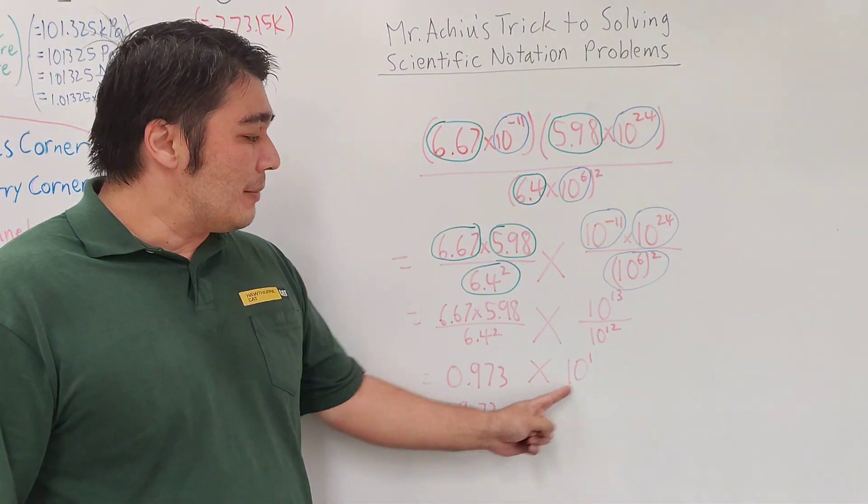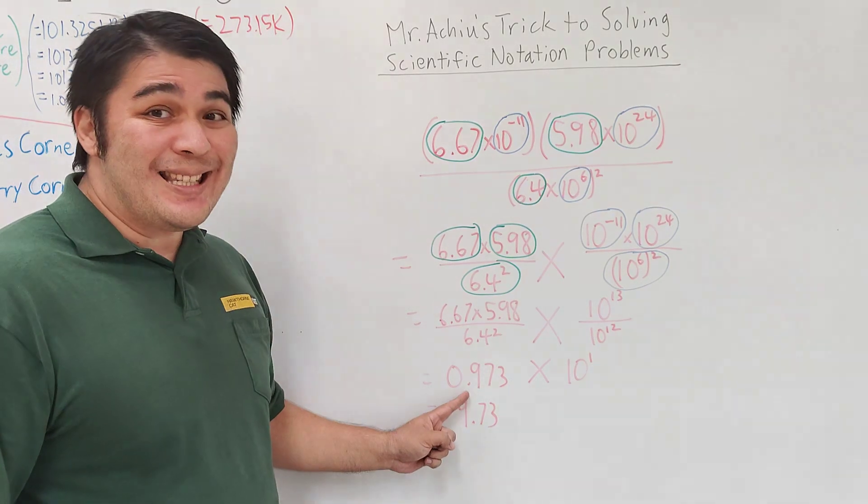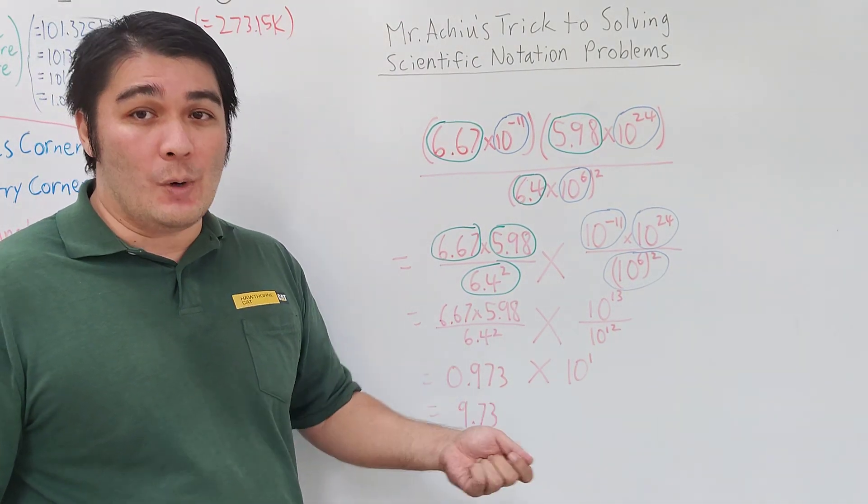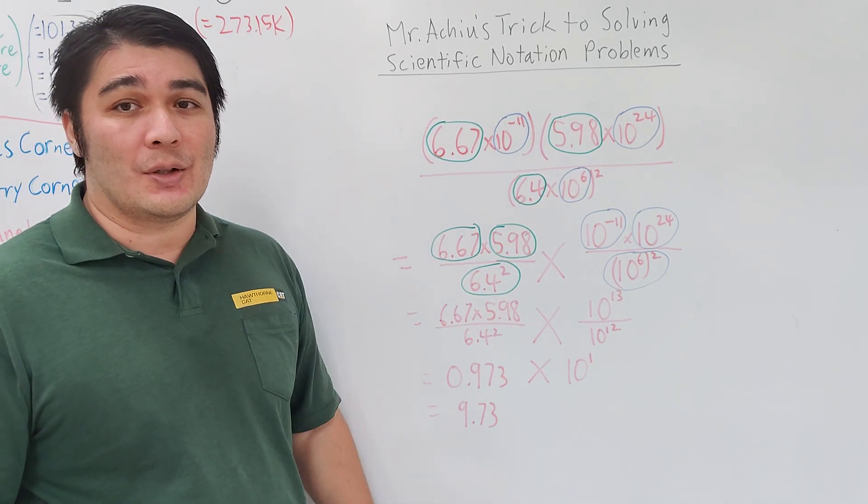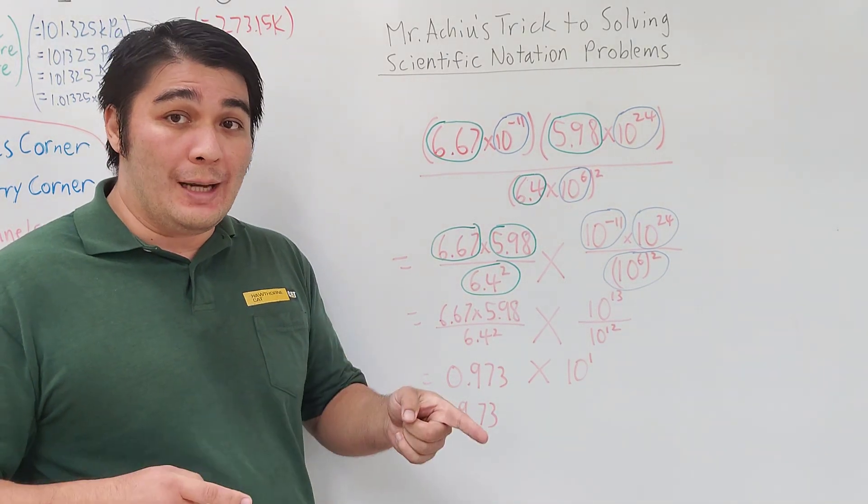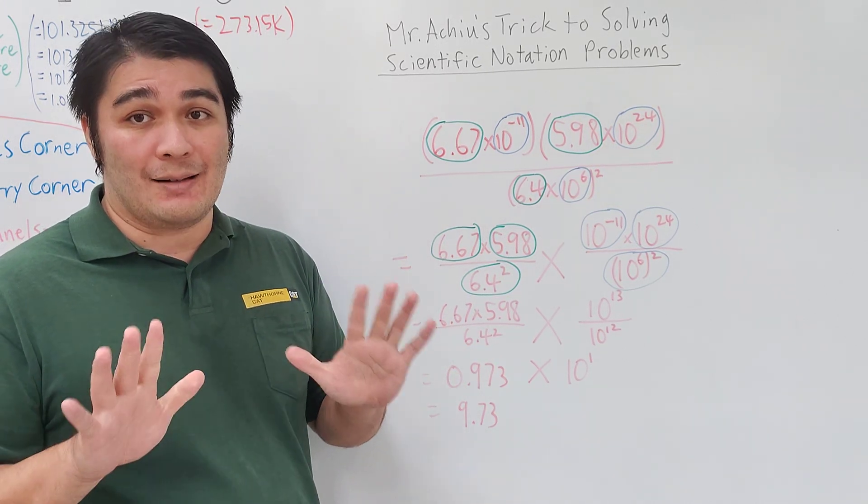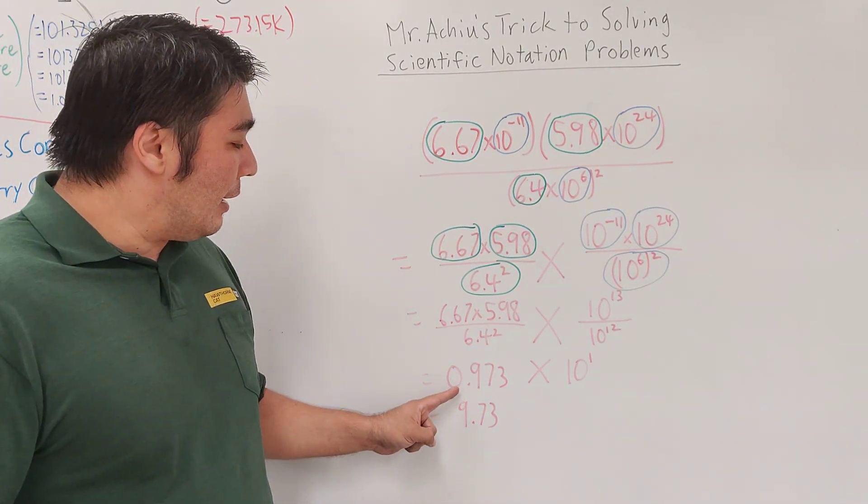However, this is not scientific notation. The reason is it's less than 1, and according to the rules of scientific notation, we need a number greater than or equal to 1 and less than 10. I have to move the decimal point over, which means I need to reduce this exponent by 1.